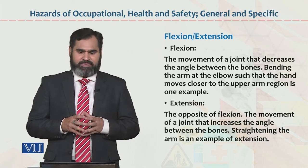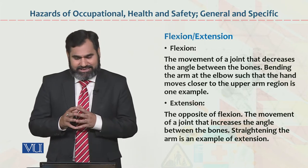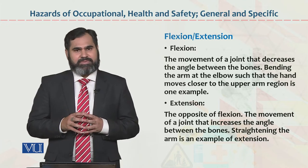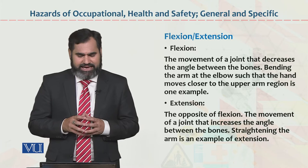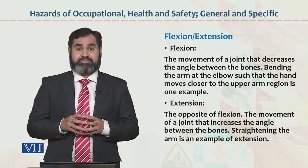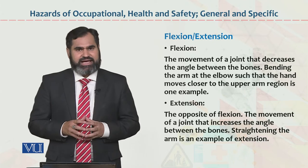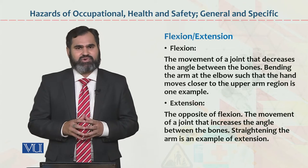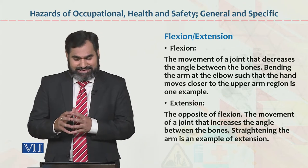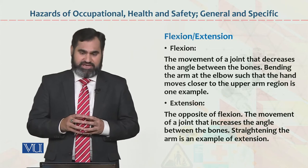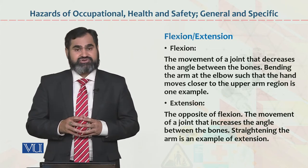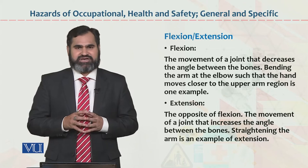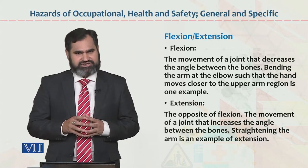Flexion and extension. Flexion: movement of the joint that decreases the angle between the bones. Is ko hum flexion bolte hain. Bending the arm at the elbow such that the hand moves closer to the upper arm region is one example of flexion. Extension is the opposite of flexion — the movement of a joint that increases the angle between the bones is known as extension. For example, straightening the arm is an example of extension. Agar aap apne baazoo ko bilkul seedha karte hain, straight ki taraf ya right side pe, to us ko hum extension bolte hain.